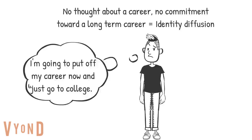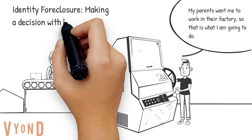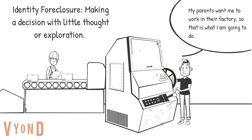Let's say Tim's parents tell him he's going to work in the factory when he gets out of school, and Tim basically decides, without really exploring any other career options, that he's going to work in the factory. That would be an example of identity foreclosure — you pick an identity without exploring the possibilities.